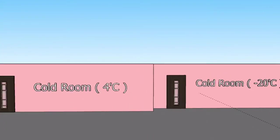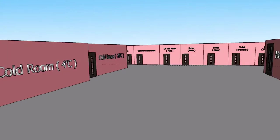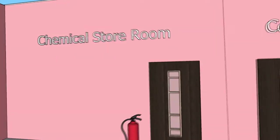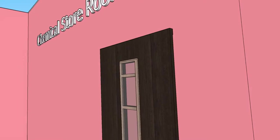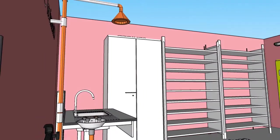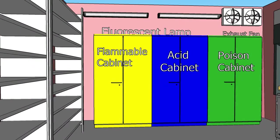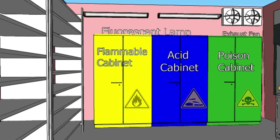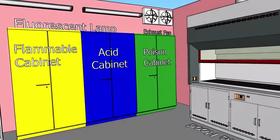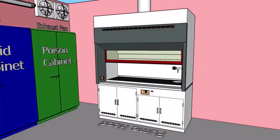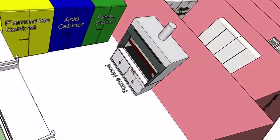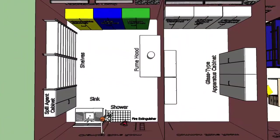Next is the chemical room, provided for chemical reagent storage. This room is equipped with a shower station, sink, and fire extinguisher for safety. Each type of chemical is segregated into a different cabinet to prevent hazardous chemical reactions, and each cabinet is labeled with its own hazard level.